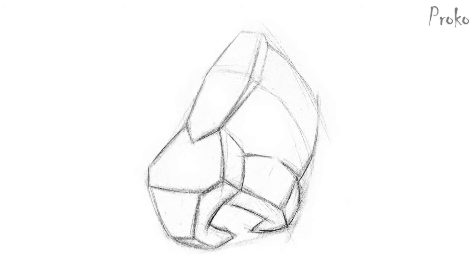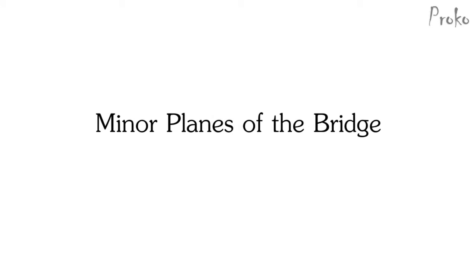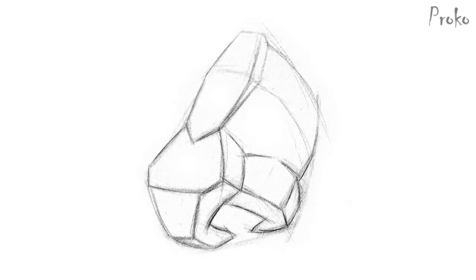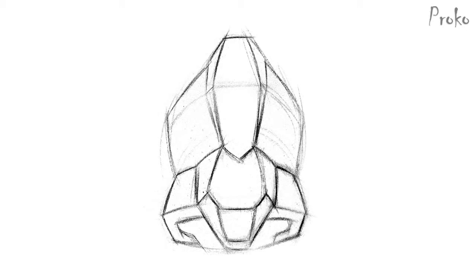So let's take a look at the minor planes of the bridge. The top plane of the nasal bone faces upward, and then slightly more downward at the lateral cartilage. From the side, you can see this slight angle change from the nasal bone to the cartilage. The connection between the bone and cartilage is usually the widest part of the bridge.